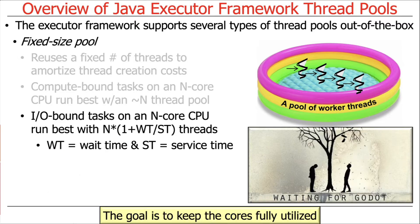I/O-bound tasks are a different matter altogether. To estimate the number of threads needed on an n-core CPU for I/O-bound tasks, you use a formula whose goal is to keep cores as fully utilized as possible. In this formula, n is the number of cores, and we compute n times the quantity (1 + Wt / St), where Wt is the wait time — the amount of time threads are blocked waiting for I/O to complete — and St is the service time, the amount of time something takes to run after the I/O data has been obtained.